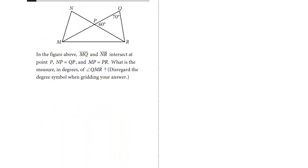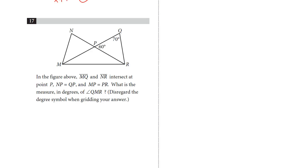Let's take a look at number 17. In the figure above, MQ and NR intersect at point P. So here's point P. NP = QP, so NP equals QP, MP = PR.